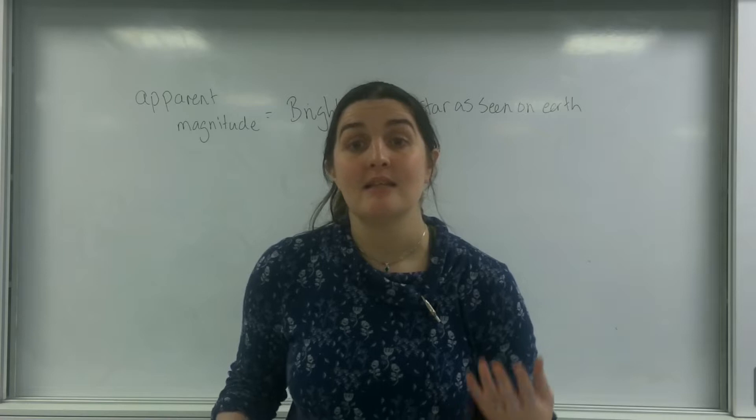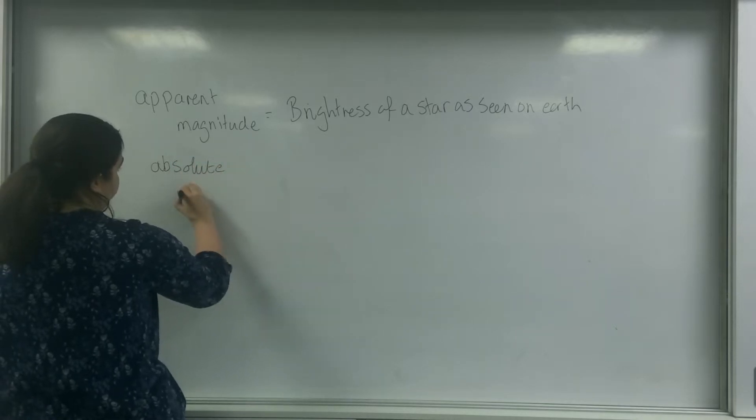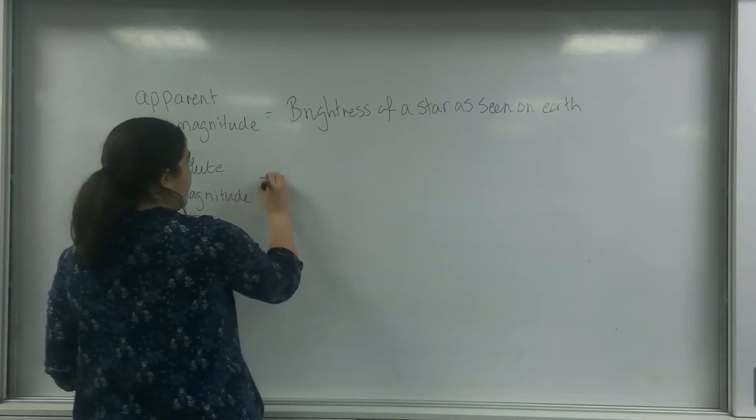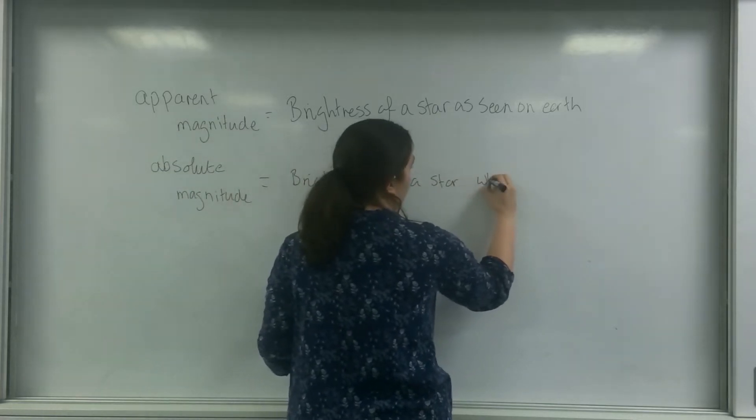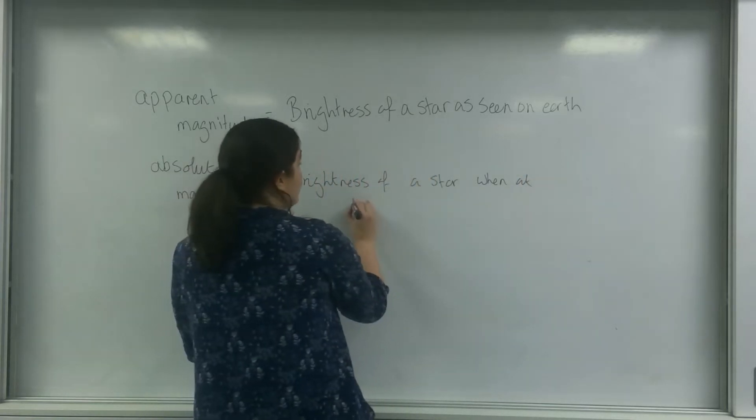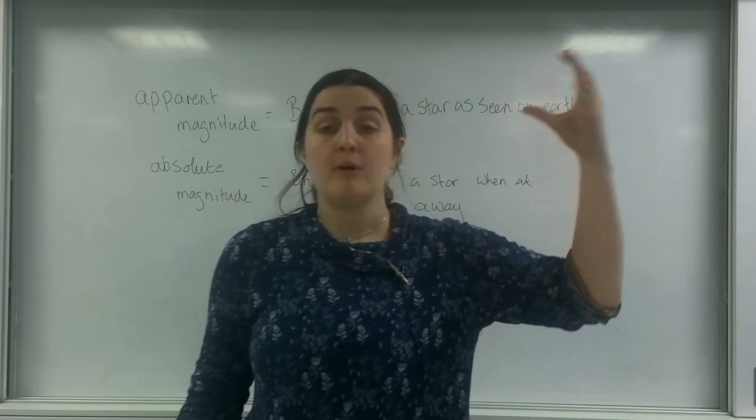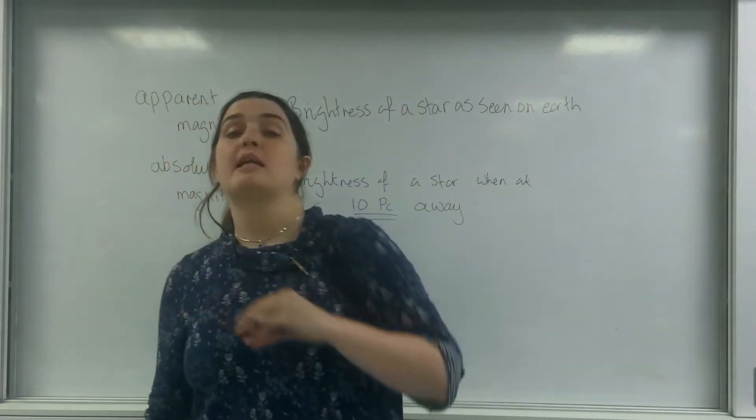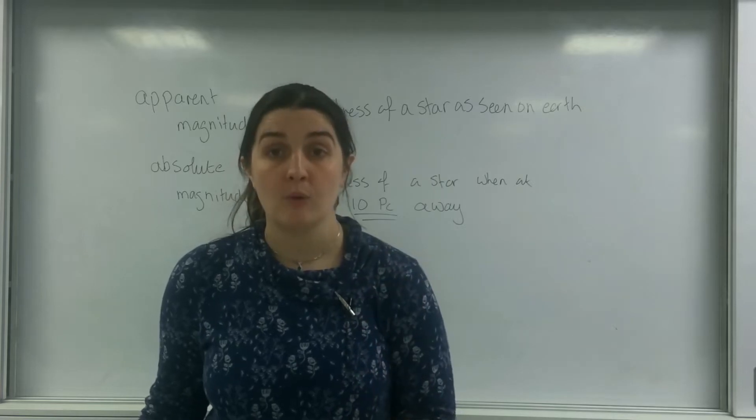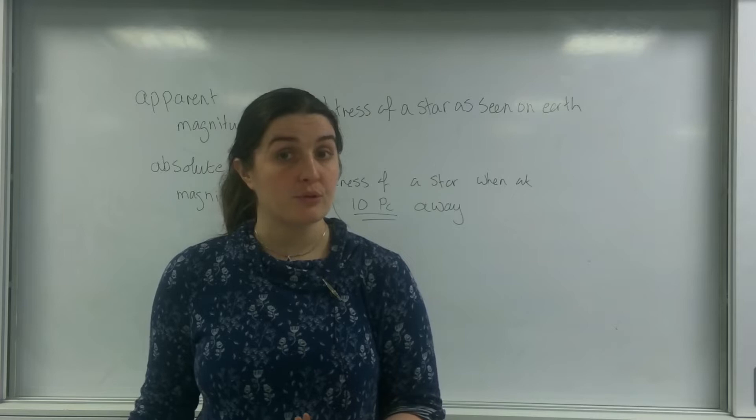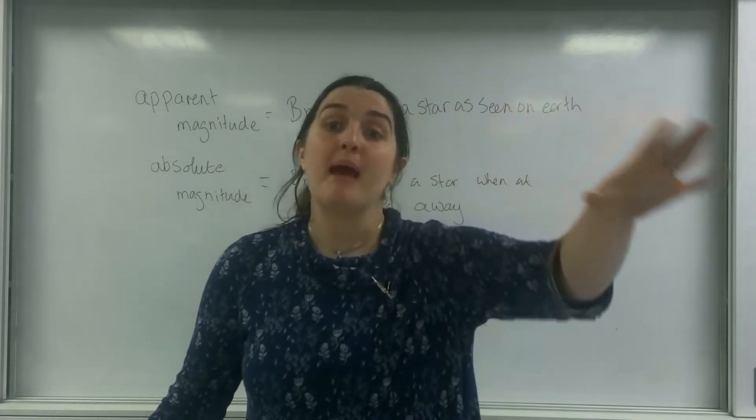And that is the basic premise of absolute magnitude. Absolute magnitude is the brightness of a star when at, this is the important part, 10 parsecs away. So the idea is that I would take my sun and I will throw it 10 parsecs away. I understand that luminosity follows an inverse square law, so I'm then able to work out how bright it would be at 10 parsecs away. I can then use that value and compare it to the other stars.